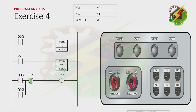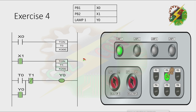Now let's go to our simulation. Let's press PB1, then let's press PB2. And that's how we solve exercise 4.